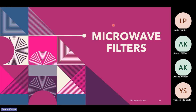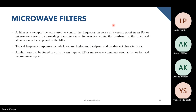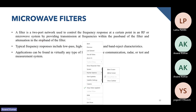Starting today, we will begin with module nine: microwave filters. A microwave filter is a two-port network used to control the frequency response at a certain point in an RF or microwave system by providing transmission at frequencies within the passband of the filter and attenuation in the stopband.